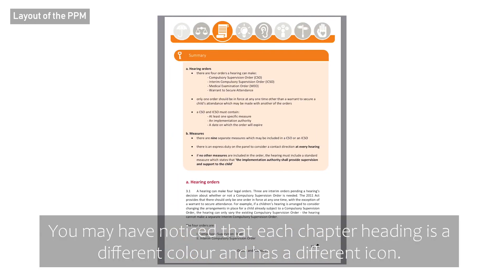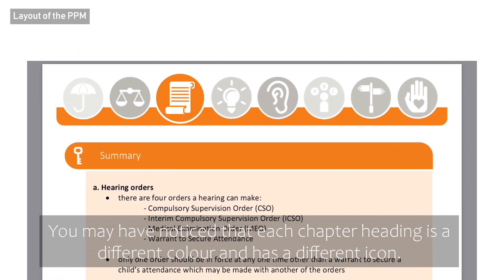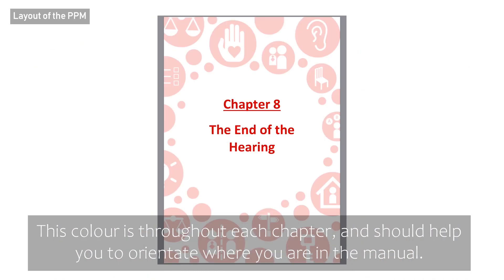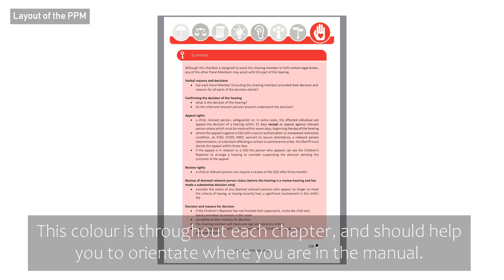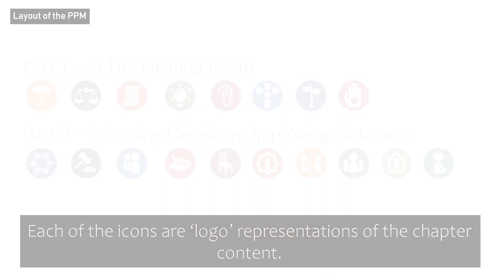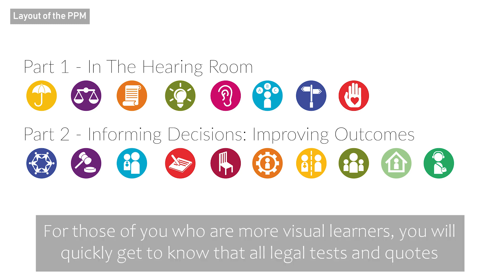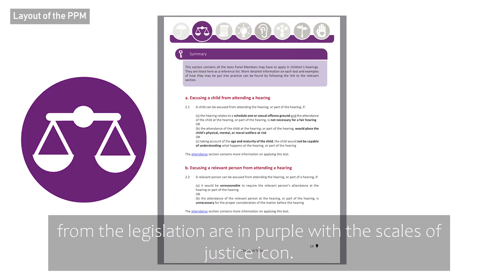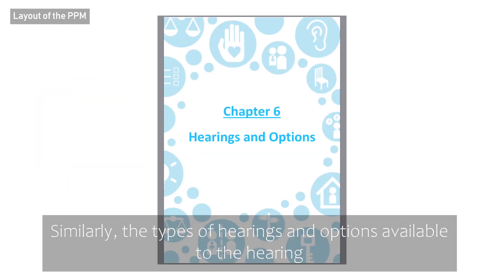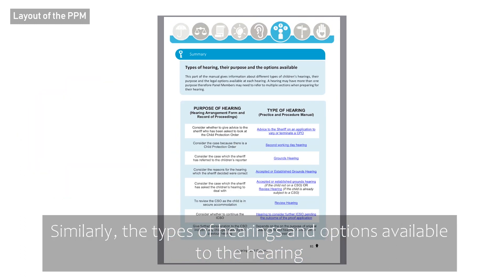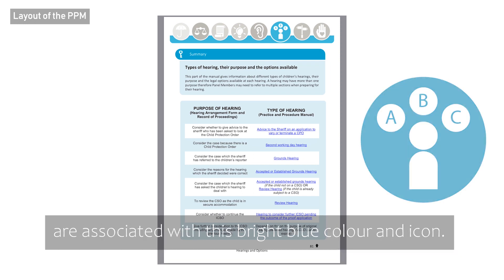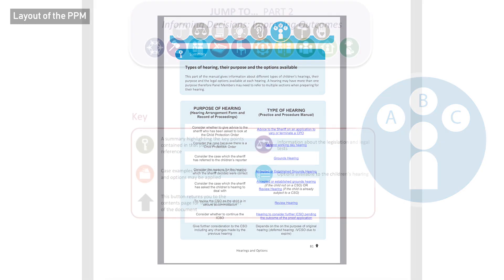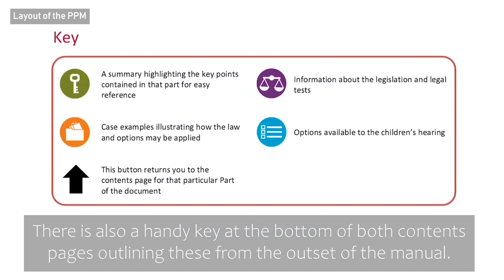You may have noticed that each chapter heading is a different colour and has a different icon. This colour runs throughout each chapter and should help you orientate where you are in the manual. Each of the icons are logo representations of the chapter content. For those of you who are more visual learners, you will quickly get to know that all the legal tests and quotes from the legislation are in purple with the Scales of Justice icon. Similarly, the types of hearings and options available to the hearing are associated with a bright blue colour and icon.